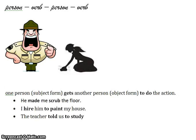The structure is person-verb-person-verb. One person in subject form gets another person in object form to do the action. So 'he made me scrub' — he is in subject form, me in object form, even though I'm the one who's actually doing it. I hire him to paint my house — I pay for it but he does the painting. The teacher told us to study — the teacher gave instructions but we did the studying. So one person causes another person to do something.